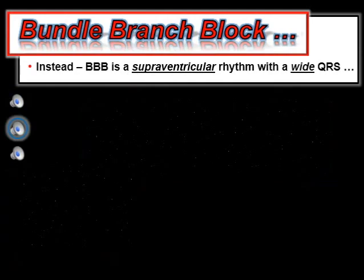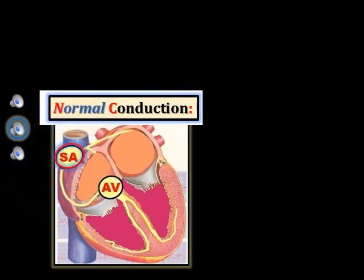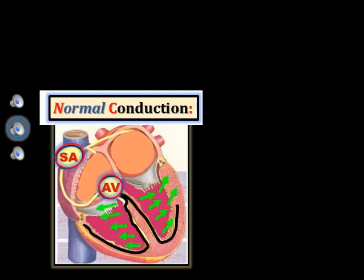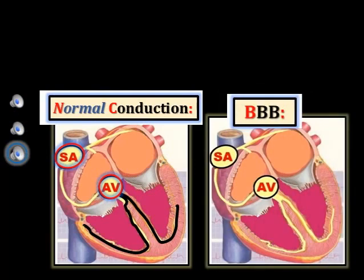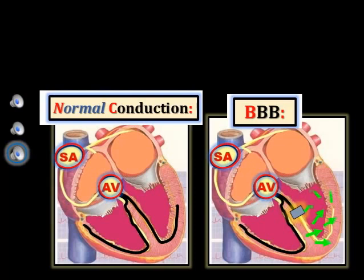Compare this to what happens with normal conduction, as in the sinus rhythm shown on the left. Transmission to the ventricles is fast — no more than 0.10 second — because conduction is normal. In contrast, with bundle branch block as shown on the right, the impulse slows down dramatically after encountering that part of the conduction system that is blocked, as conduction must now occur through non-specialized ventricular fibers. As a result, conduction to the ventricles is delayed and the QRS complex is wide.